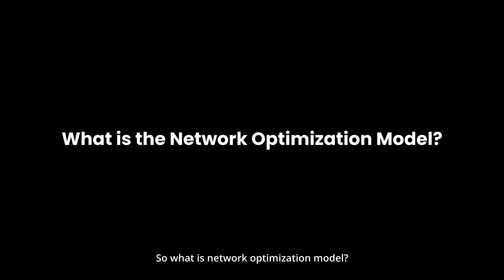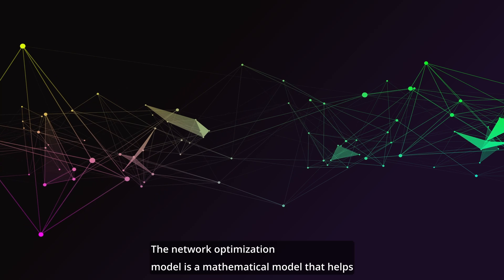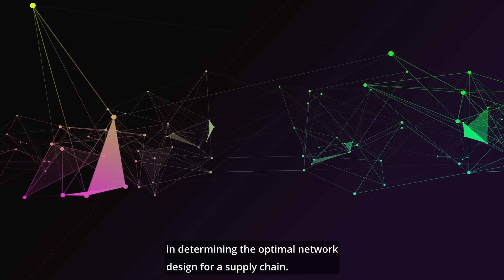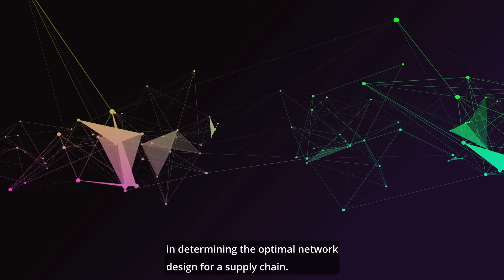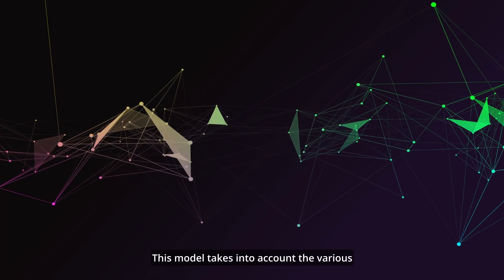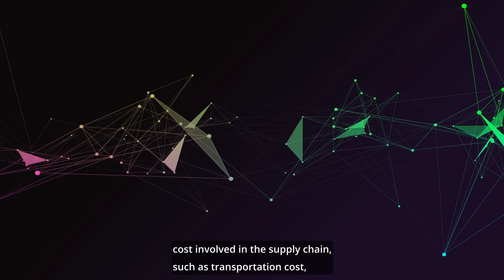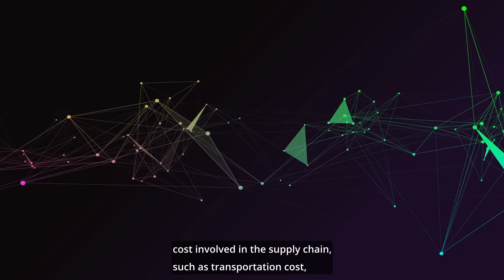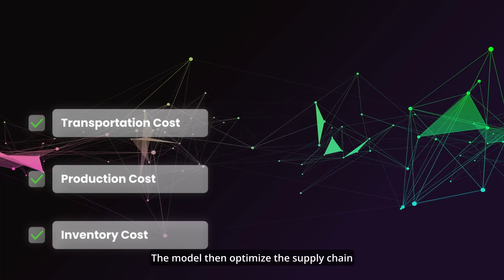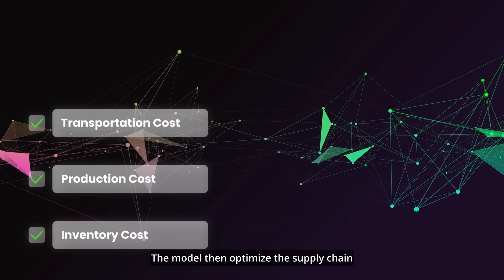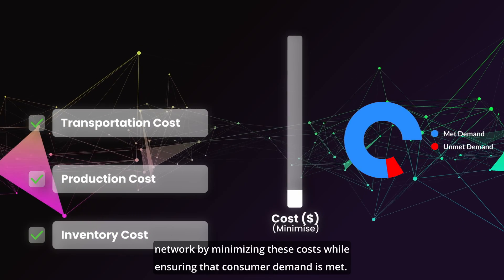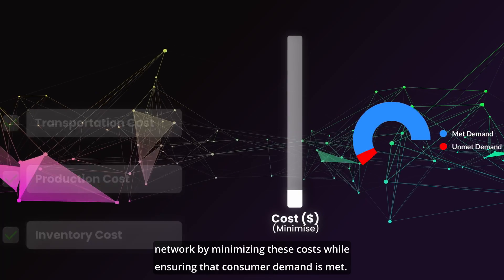So what is the Network Optimization Model? The Network Optimization Model is a mathematical model that helps in determining the optimal network design for a supply chain. This model takes into account the various costs involved in the supply chain such as transportation cost, production cost, inventory cost, and other related costs. The model then optimizes the supply chain network by minimizing these costs while ensuring that consumer demand is met.